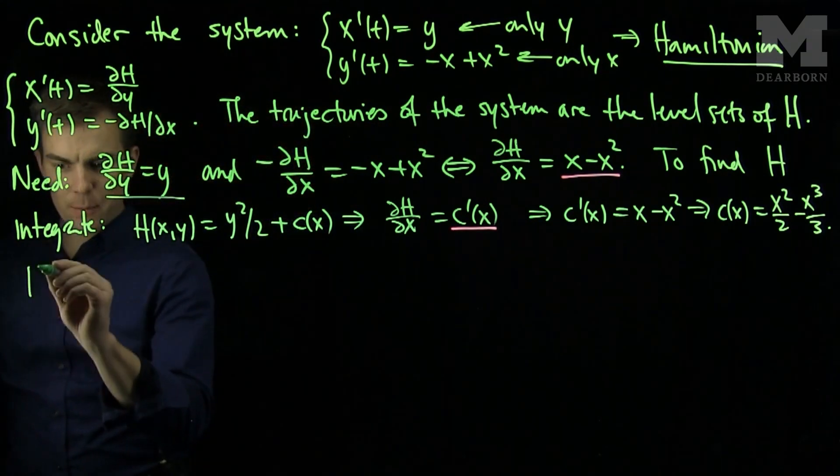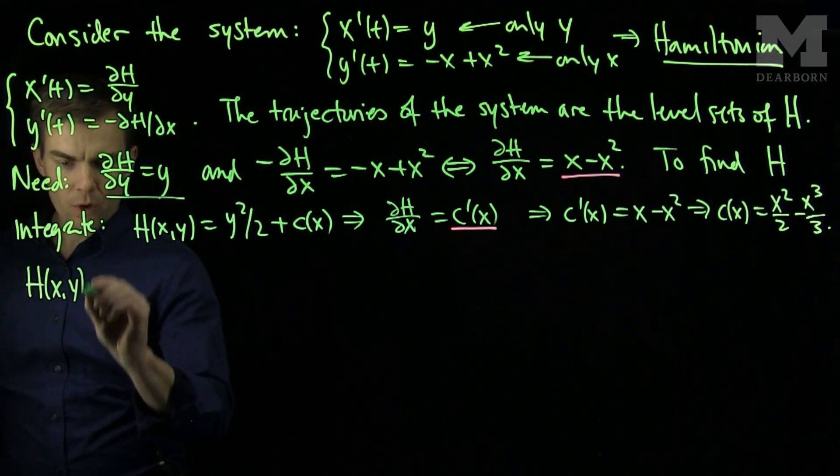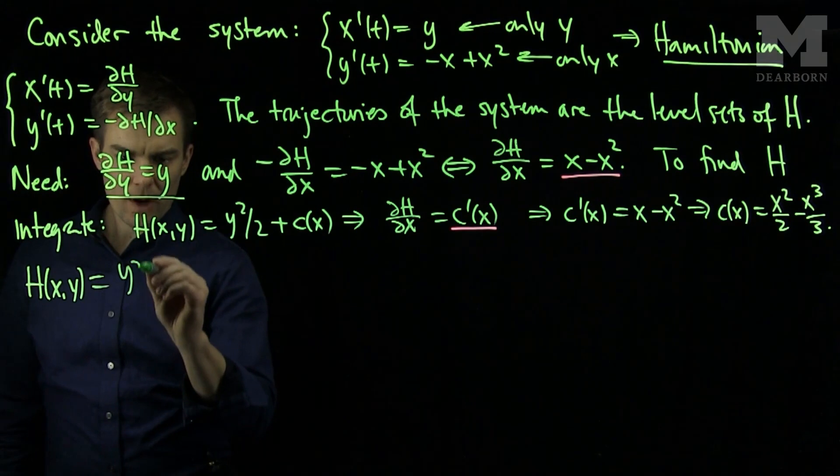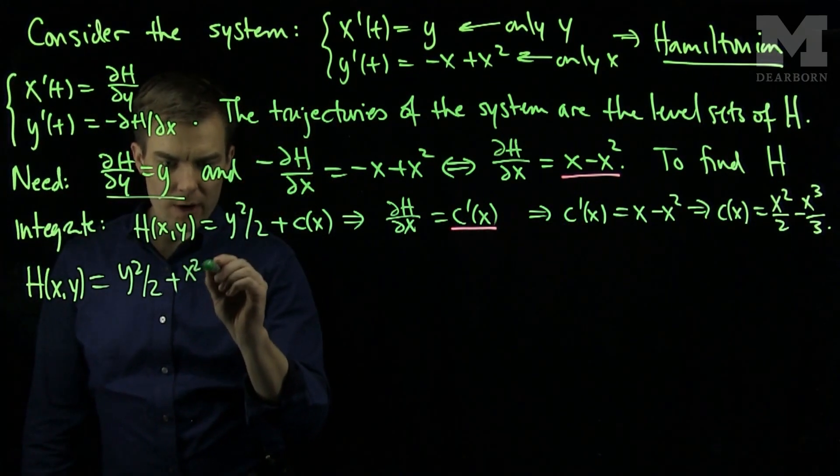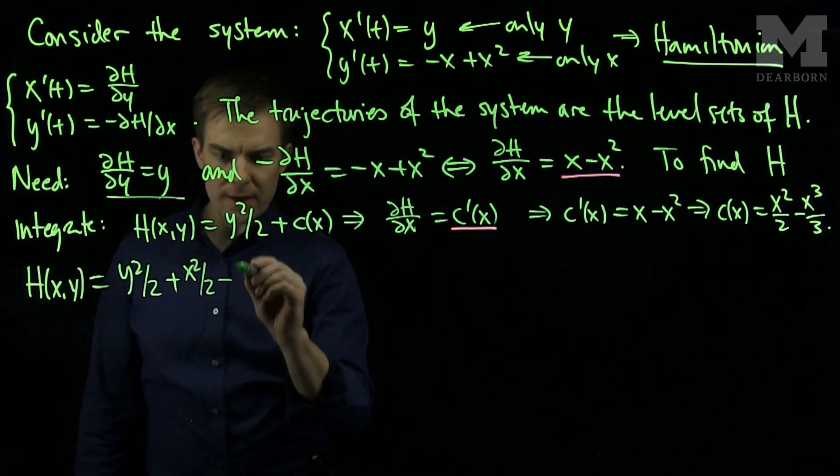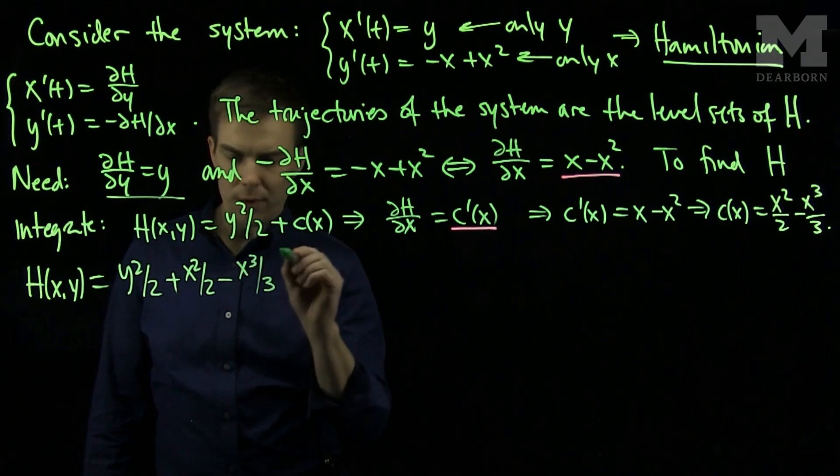So we see that the Hamiltonian will be y²/2 + x²/2 - x³/3.